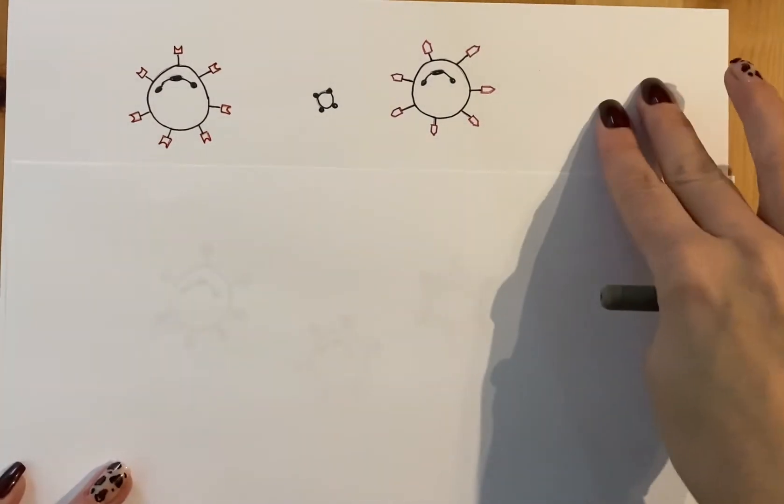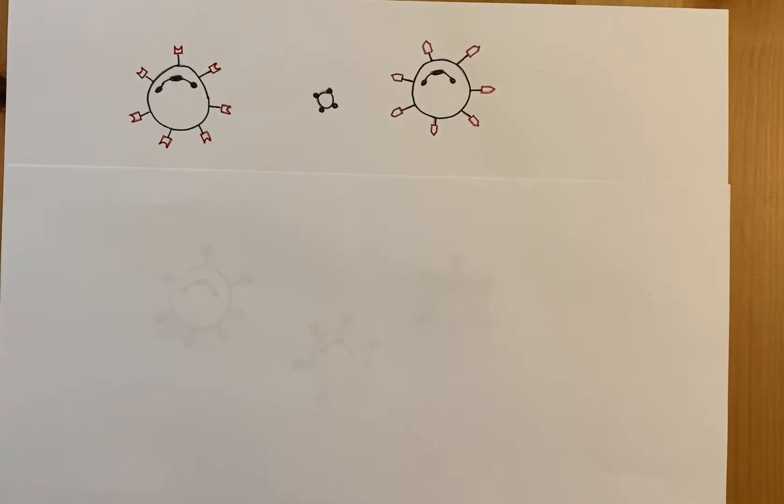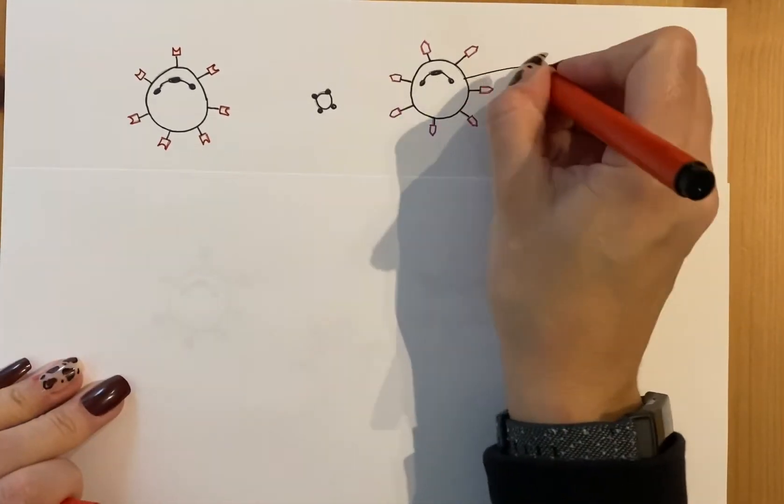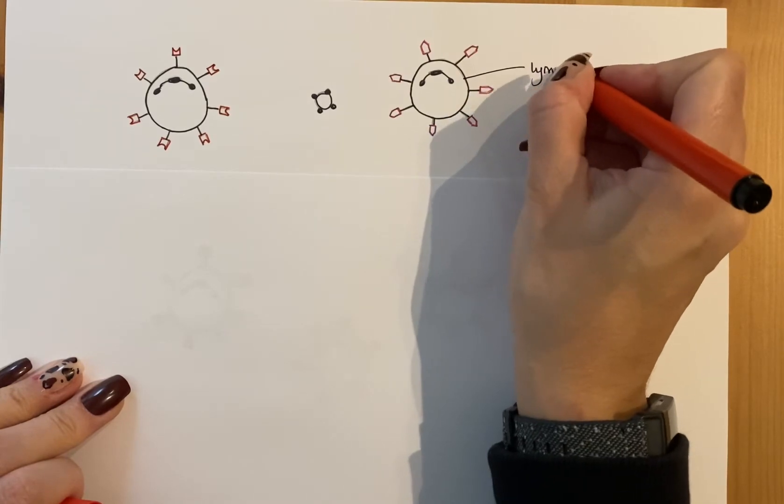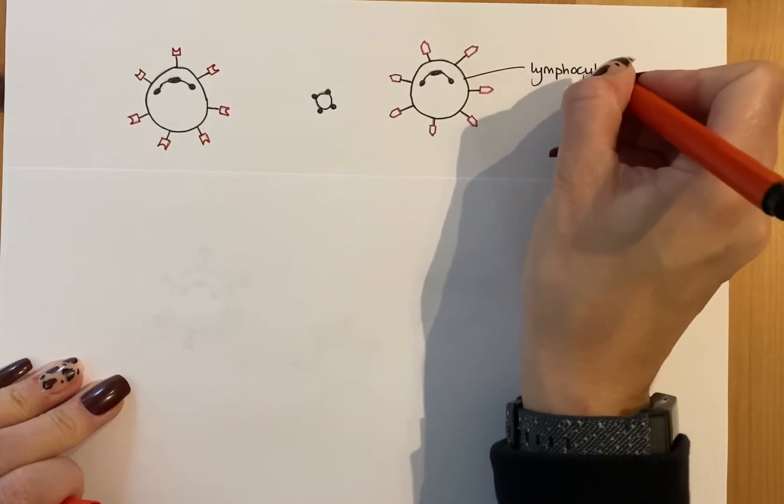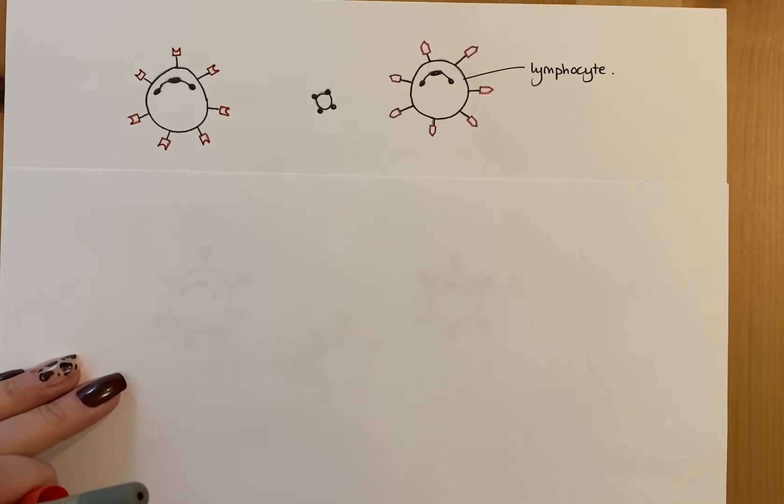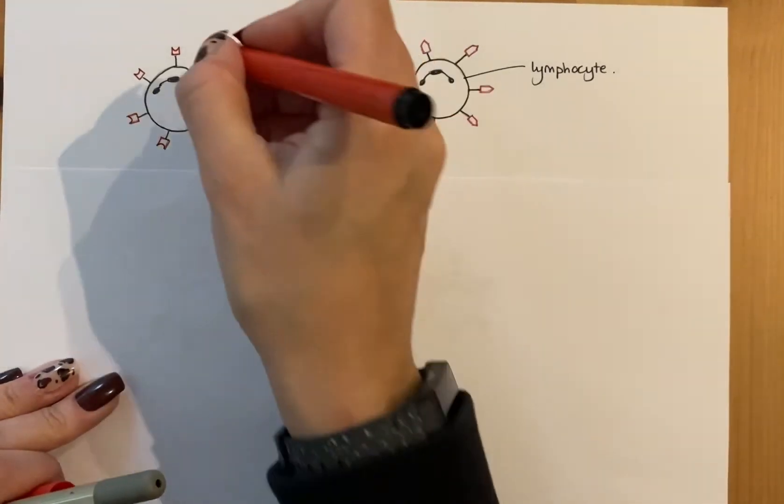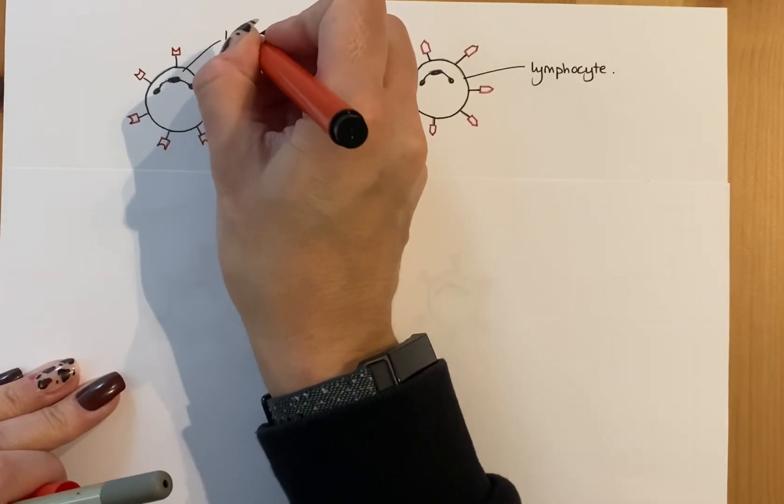So this diagram I've got here, these are essentially just two lymphocytes, so this is a lymphocyte. Now I'm not specifying which type because it doesn't matter at this point in time. It will matter later when we talk about the next video. This is also a lymphocyte.